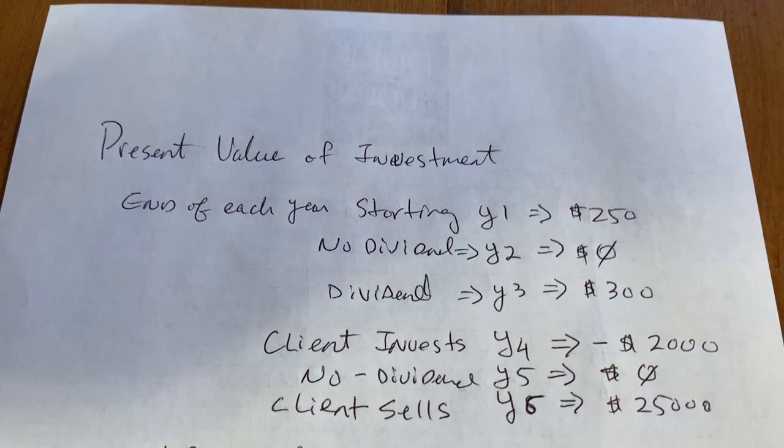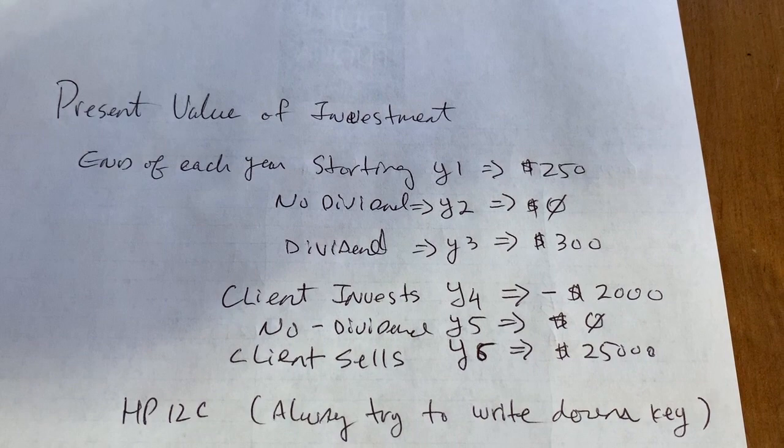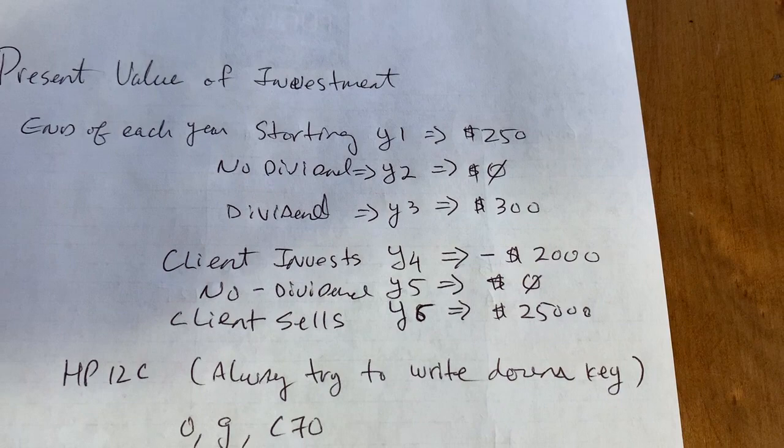But if a client wants to calculate a present value of investment, and let's say they start out year one, they're going to get $250 dividend. The second year, they won't get anything. Third year, they'll get $300.